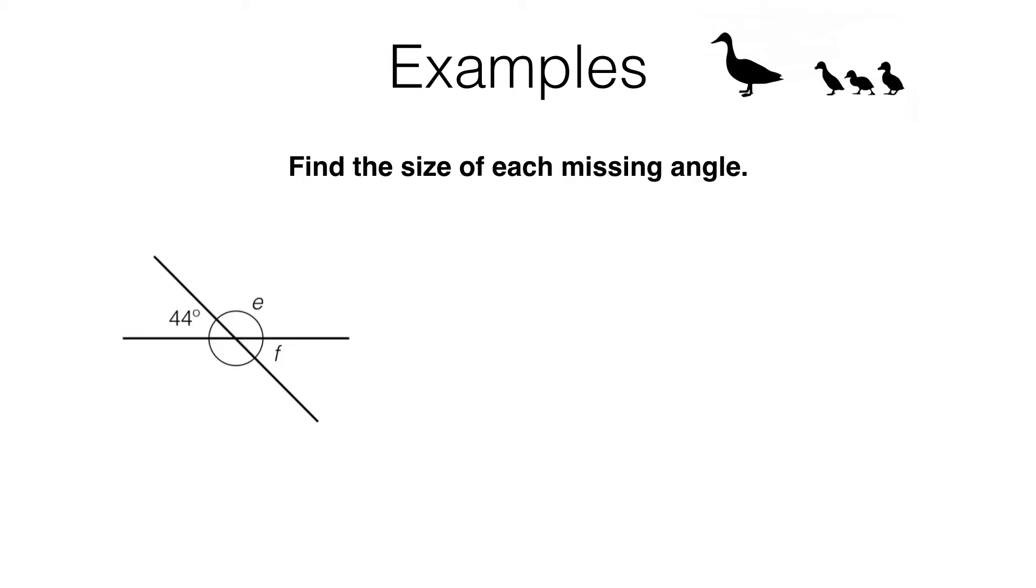In this last problem we have two angles we need to find. We need to find E and F. Now we can do this entirely using our current knowledge. We can see that E and this 44 degree angle meet at this point on this straight line. Hopefully you've spotted that these two angles must add up to 180 degrees. So to find E we need to do 180 minus 44. If you work that out you find that E is 136 degrees.